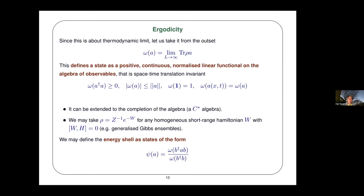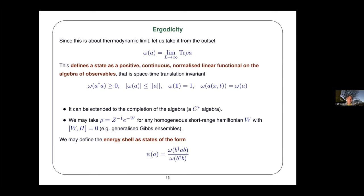Question: Why do you say that is the counterpart of an energy shell state? Answer: ψ is a state satisfying those properties, but it is not space-time translation invariant. My interpretation is that it is a state not too far from ω — it's a local modification of ω. If you take a state with a different temperature, it would be very far. In that sense it's like an energy shell: it's a local modification, within the GNS representation of the state ω. Of course one can ask about more general states, but it is convenient to consider these for the discussion.